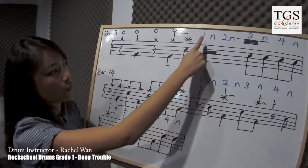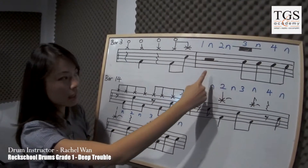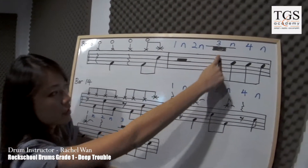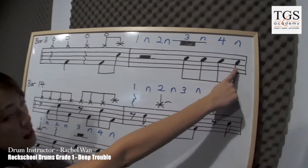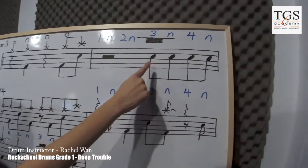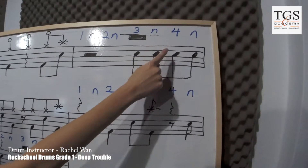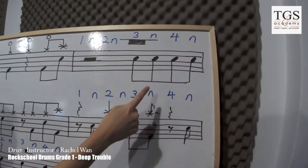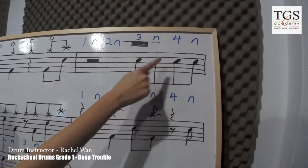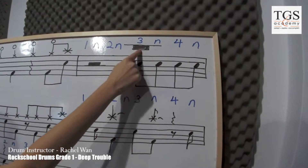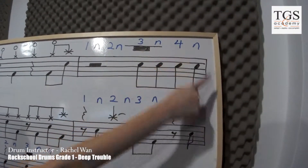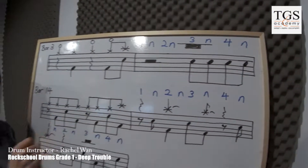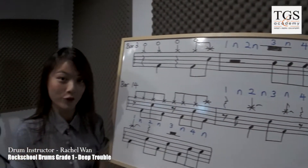So meaning counts 1 and 2, you don't have to play anything. From count 3 onwards, there are 4 consecutive 8th notes fill in at the snare drums. So it's 3 and 4 and. Let me demonstrate for you.